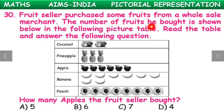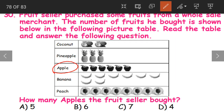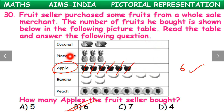Question 30. A fruit seller purchased some fruits from a wholesale merchant — a seller. The number of fruits he bought is shown in the picture table. How many apples did the fruit seller buy? We count the apple pictures: one, two, three, four, five, six. Six apples. There is no scale given here saying one picture equals a certain number, so we just count the pictures. The answer is option B: six.